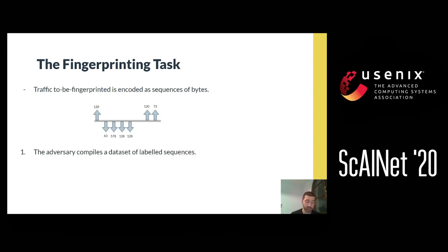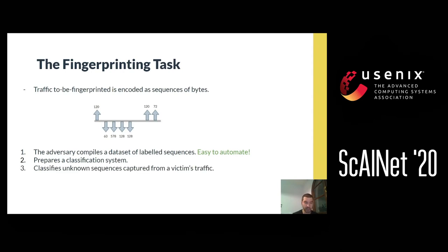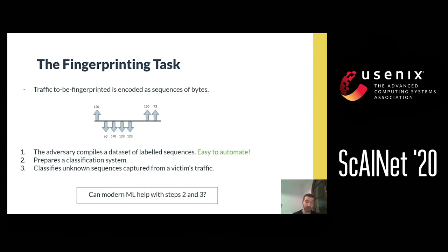The fingerprinting process from the adversary's perspective involves: first, compiling a dataset of labeled sequences from web pages or websites to fingerprint — this is fairly easy to automate; then preparing a classification system, which can be a very advanced machine learning system or just a manual annotation system; and then, once the adversary captures traffic they wish to fingerprint, pushing it through the system to have it classified. Since the first step is fairly easy to automate, machine learning can help with steps two and three.